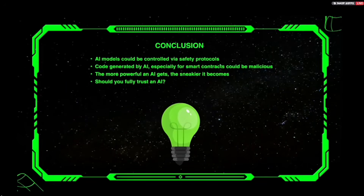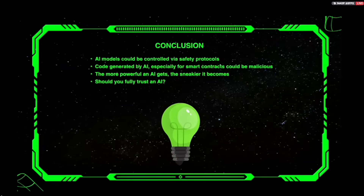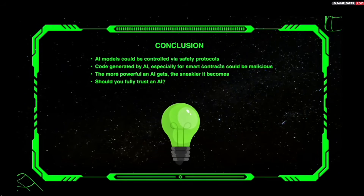In conclusion, AI models could be controlled by safety protocols, but it can be very hard — especially if the next AI model is magnitudes more powerful than the previous one, making it very tricky to control. Code generated by AI for smart contracts could be malicious, and using AI alone to generate smart contract code for production is not recommended. As AI gets more powerful, we can assume it becomes sneakier. Whether you should fully trust AI is for you to decide — but right now, the answer should probably be no.